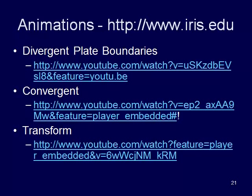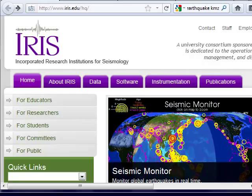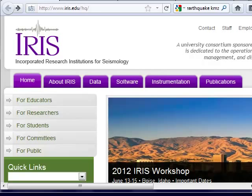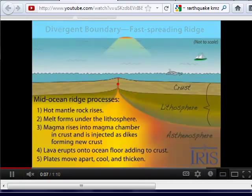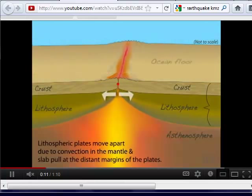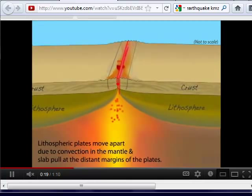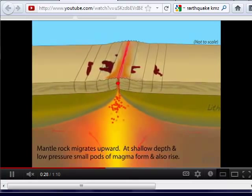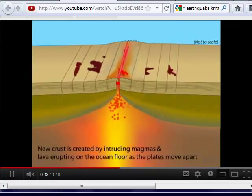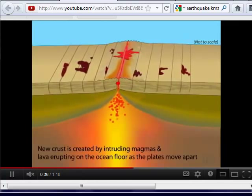For a closer look at what's happening at each boundary type, here are three videos from the IRIS website — the Incorporated Research Institutions for Seismology. The first shows a divergent plate boundary: hot mantle rock rises, melts build up underneath the oceanic crust, magma rises and creates new crust as the plates are pulled apart. At that mid-ocean ridge, the crust is pulled apart over time and gets older and older as we move away from the center, with eruptions of magma visible on the surface.